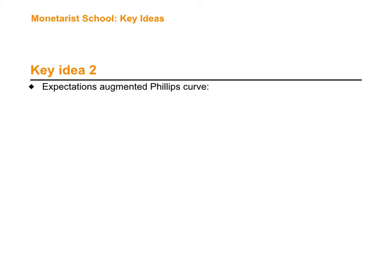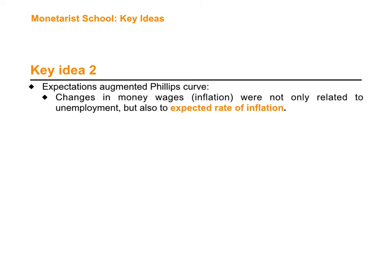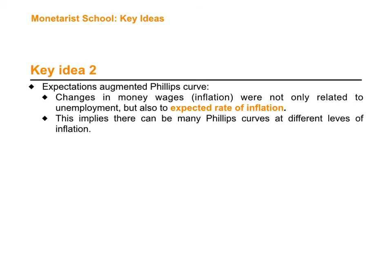Key idea number two is the monetarist Phillips curve. The Phillips curve was a relationship between money wages and unemployment — a negative relationship that William Phillips found. This idea was then included into Keynesian thinking, but Milton Friedman said changes in money wages or inflation were not only related to unemployment but could also be affected by what we call the expected rate of inflation — how much inflation is expected by agents or individuals in the economy.